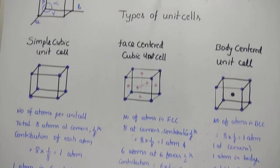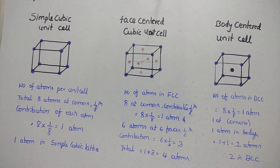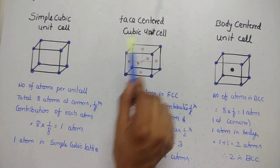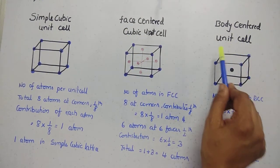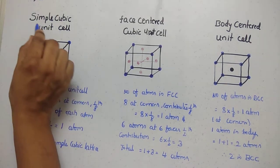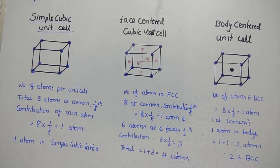The types of unit cell are: simple cubic unit cell, face-centered cubic unit cell, and body-centered cubic unit cell. First, we will go to the simple cubic unit cell.